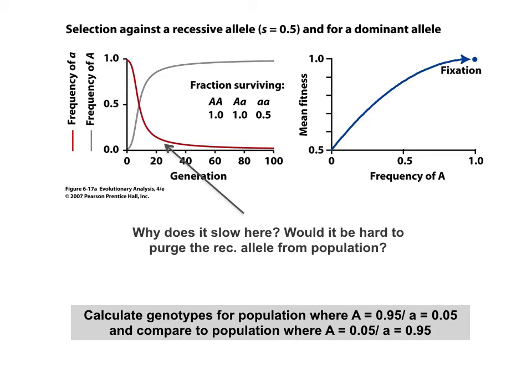At very late generations — say generation 80 — there are very few heterozygous individuals, and basically a zero percent chance that a heterozygous individual will encounter another heterozygous individual. Nearly all matings will be between wild-type homozygotes, or occasionally a wild-type homozygote mating with a heterozygote. In that case, the recessive lethal allele persists at very low frequency indefinitely, sheltered within heterozygous carriers.